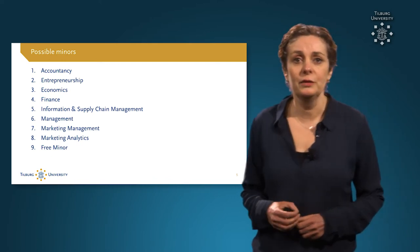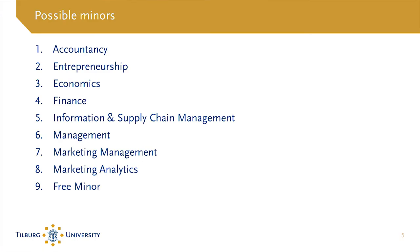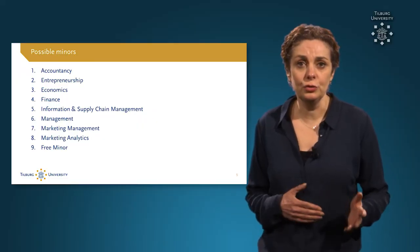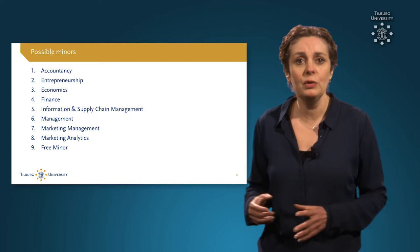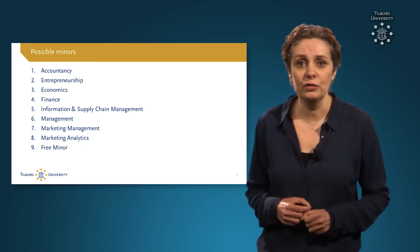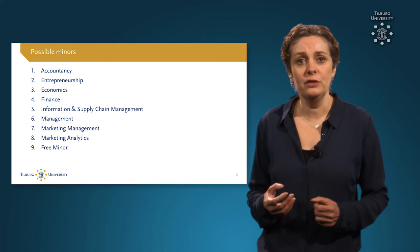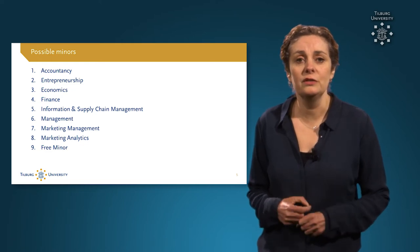In total, we offer eight different minors. As mentioned, each minor consists of three courses. Next to this video, each minor has a separate video in which you receive more information about the minor and the specific courses in that minor. You can also choose a free minor, which means that you choose three courses from the different minors that we offer and create your own personal minor. It gives you the opportunity to expand your knowledge in a variety of different business aspects.